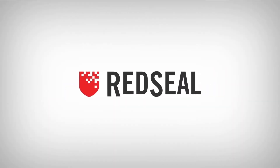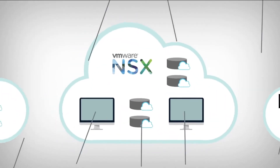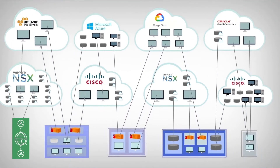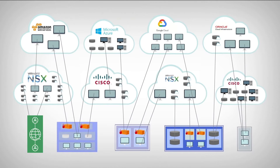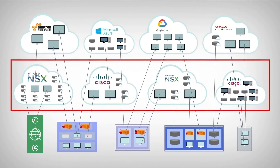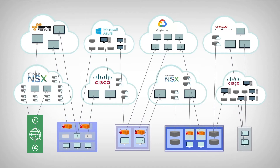Red Seal can normalize this hybrid environment and show you the entire network as one cohesive model. You can have a single view of your hybrid data center, including public and private clouds and your physical assets. Red Seal can model the entire data center and show you how everything works together.